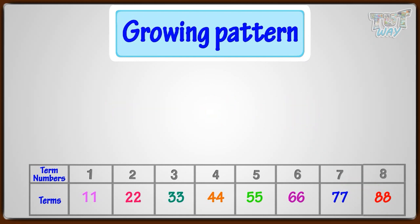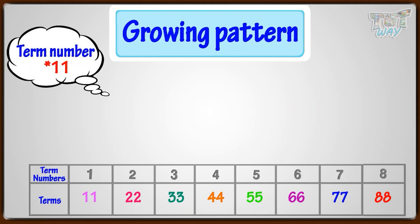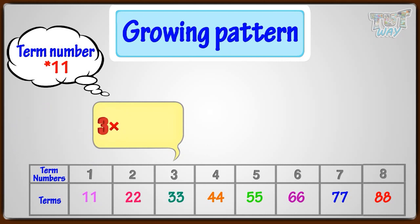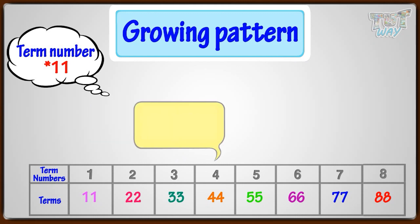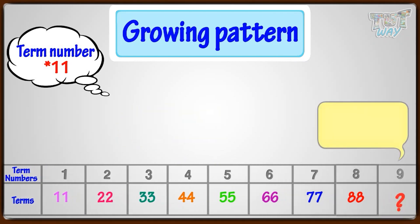There is another way too. We can see that every term is the term number multiplied by 11. Like term number 1 is 11 multiplied by 1, that is 11. Term number 3 is 3 multiplied by 11, that is 33. Term number 4 is 4 multiplied by 11, that is 44. So if we have to find out the 9th term, we can say that it will be 9 multiplied by 11, which is equal to 99.